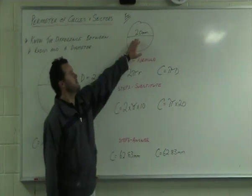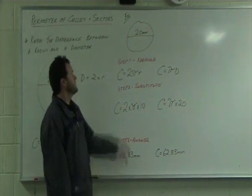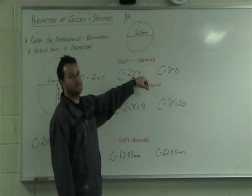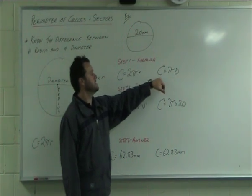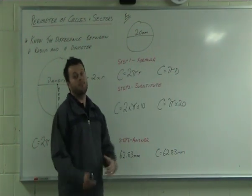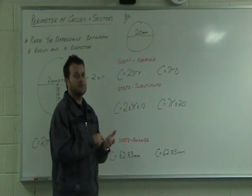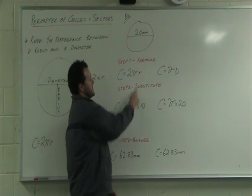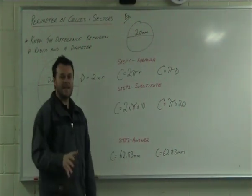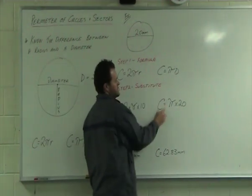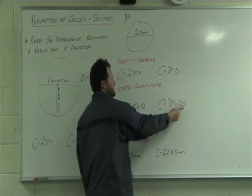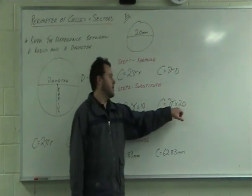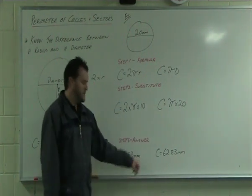Let's look at an example. We're given a diameter of 20mm. Step one: formula. I'll do both so you can see. C equals 2 times pi times r, and C equals pi times D. Step two: substitute in. The radius is 10 — half of 20. So we have 2 times pi times 10, or pi times 20. Both give 62.83 millimetres. Make sure you include the units.